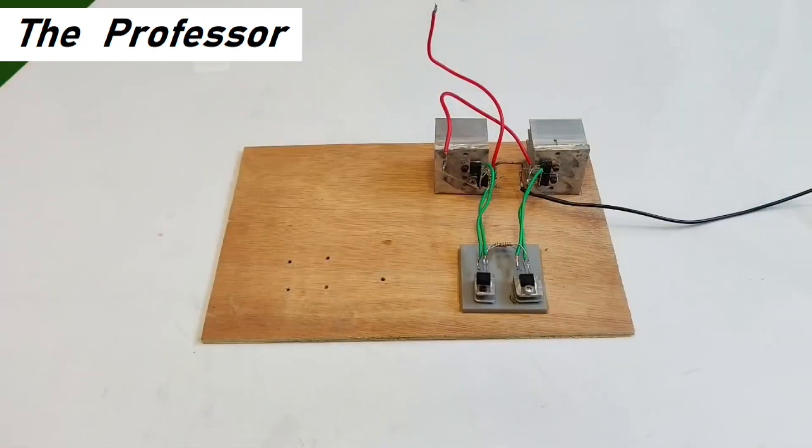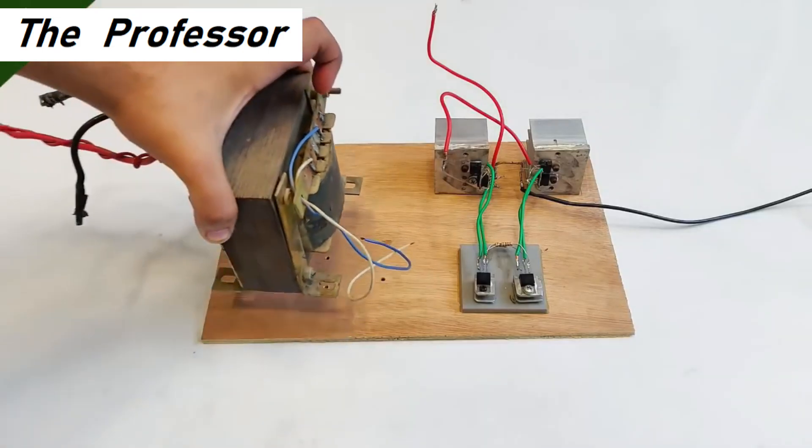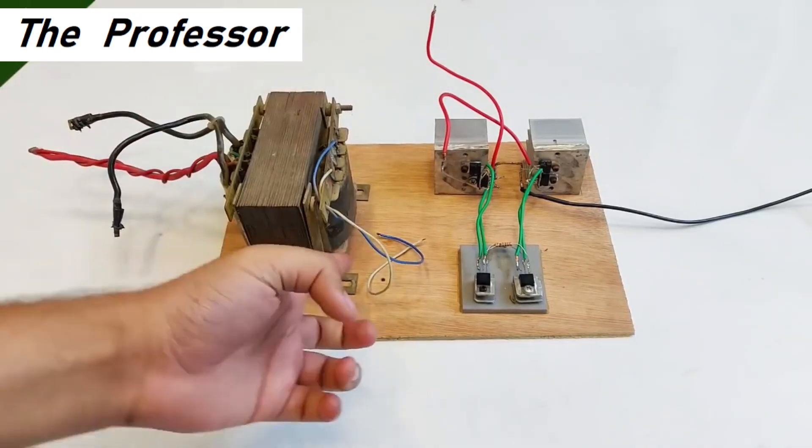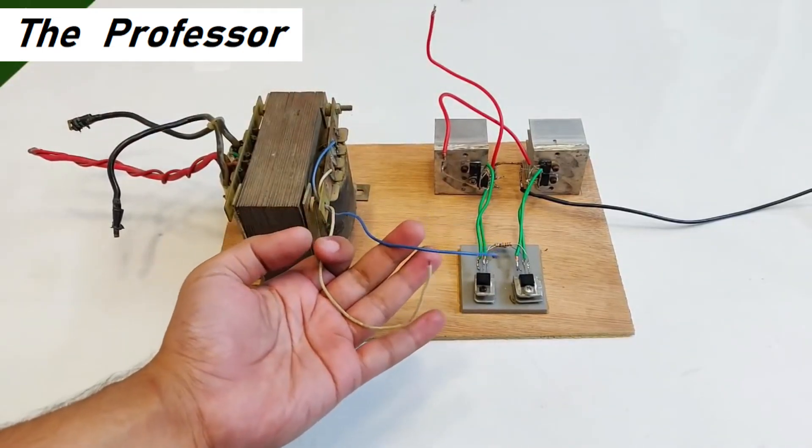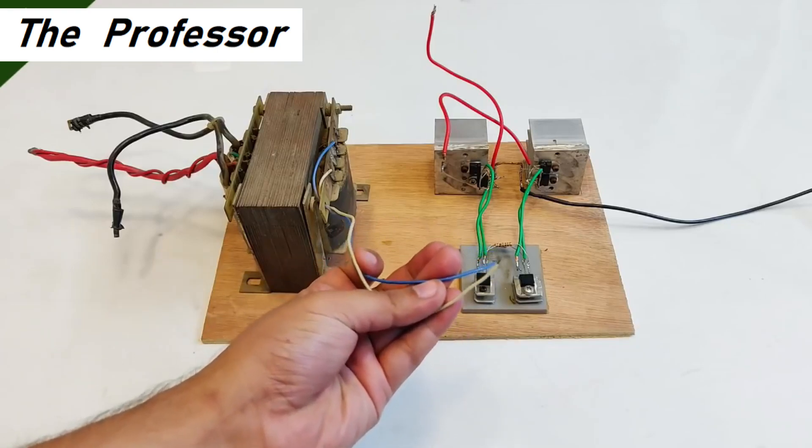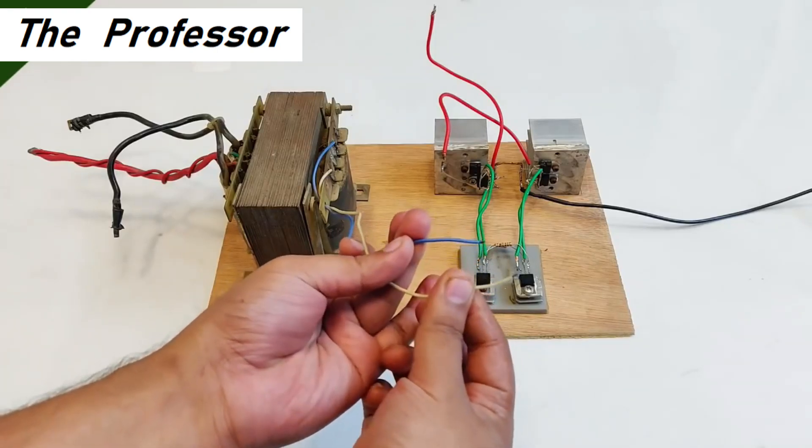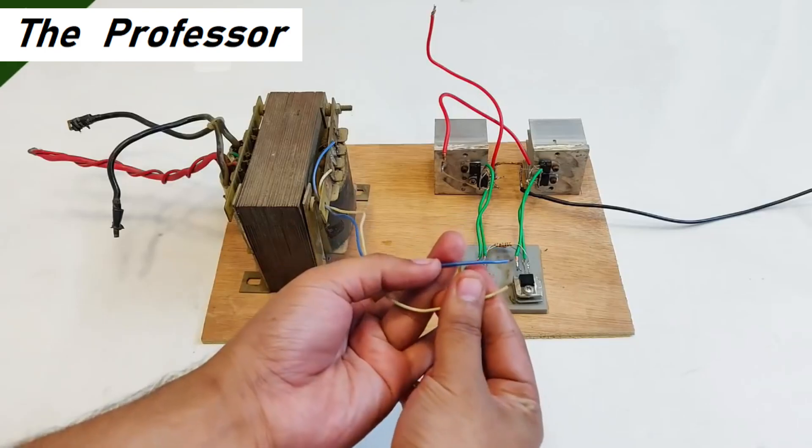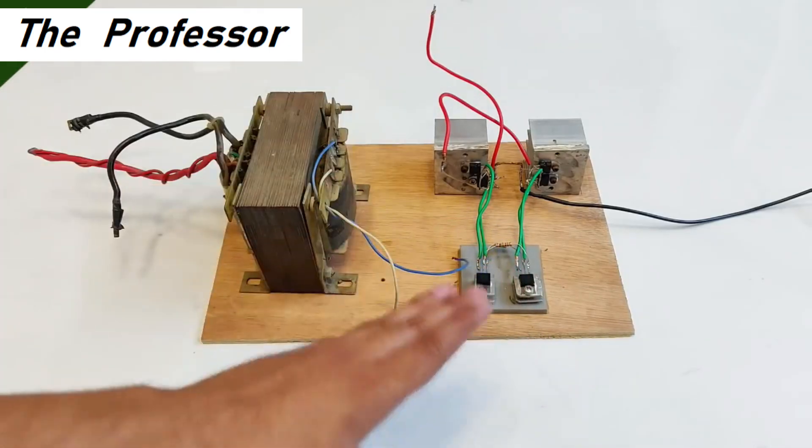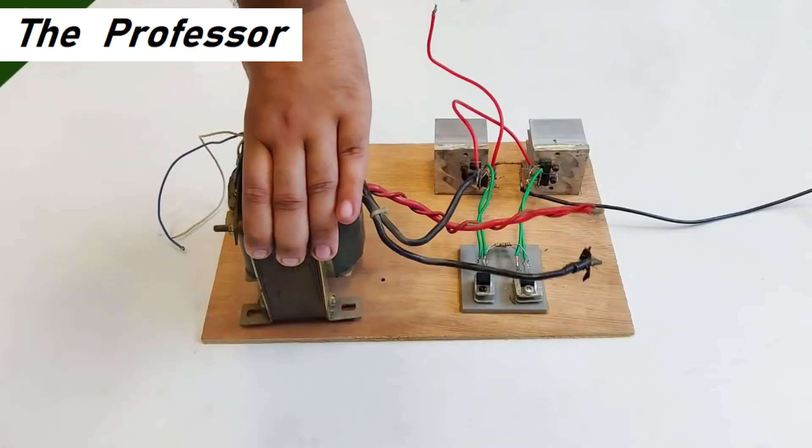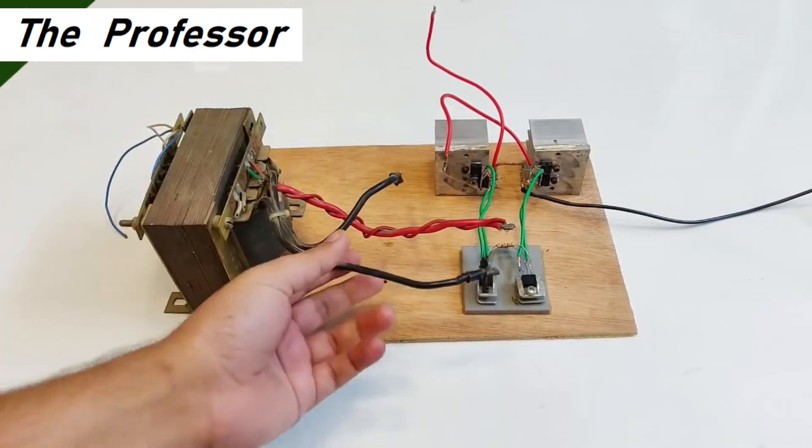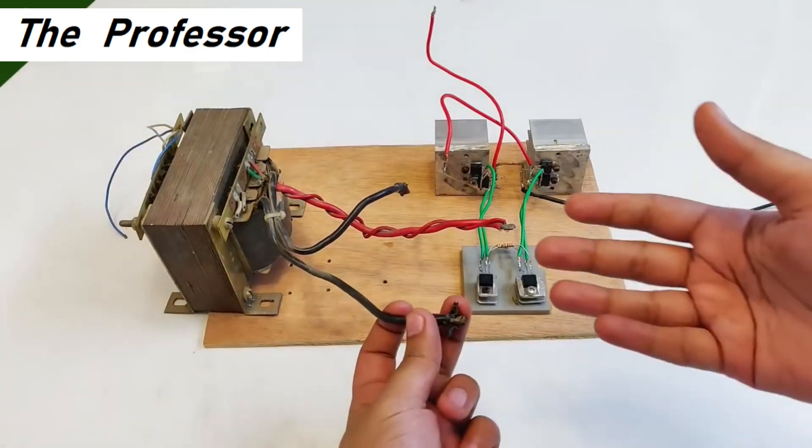Without any further delay I'm going to use this UPS transformer. This is the blue and white wire which represents the high voltage side. You can see the wires are thin because the output voltage is going to be high but the current is going to be less.